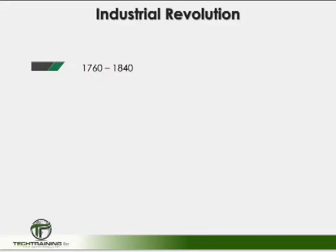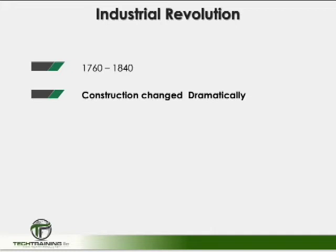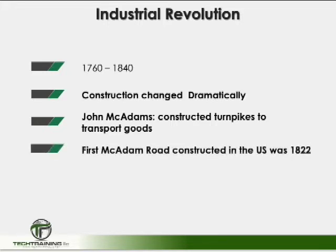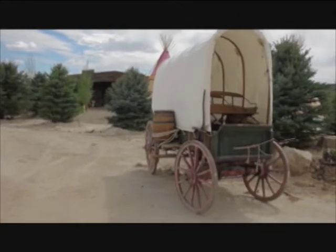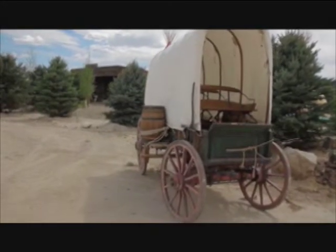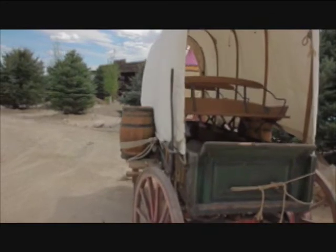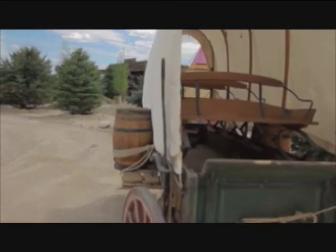The Industrial Revolution began in England in about 1760 and ended around 1840. During this period, many industries changed, most notably the textile and construction industries. John McAdam began to construct turnpikes or roads — known as McAdam Roads. The first McAdam Road in the U.S. was laid on the Boonesboro Turnpike, Maryland, in 1822. With faster travel times, merchants began to connect the relationship of time and money.